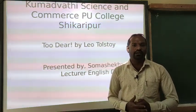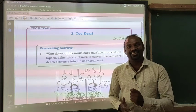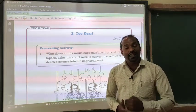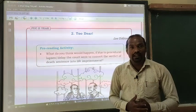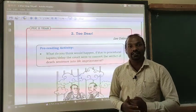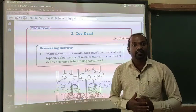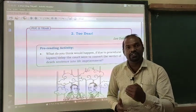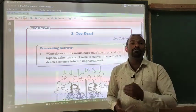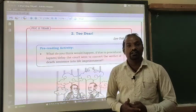Dear students, before getting into the chapter, let's look into the brief introduction about the author. Leo Tolstoy is a Russian writer who writes primarily short stories and novels. He is very famous for his two long narratives: War and Peace, published in 1869, and Anna Karenina, published in 1877.